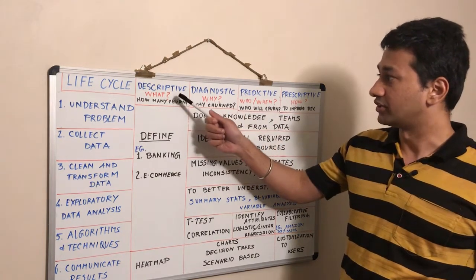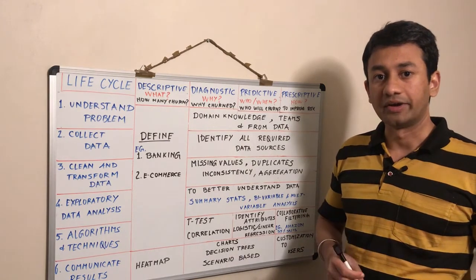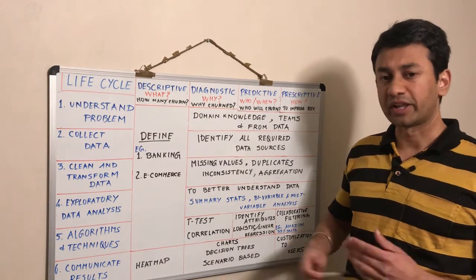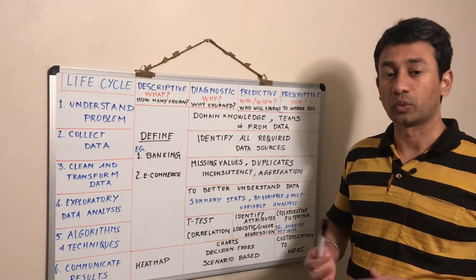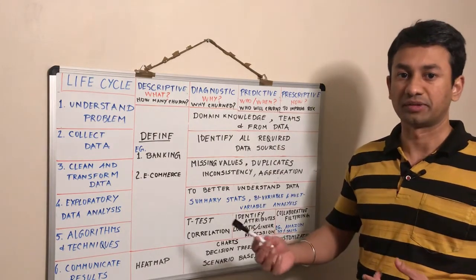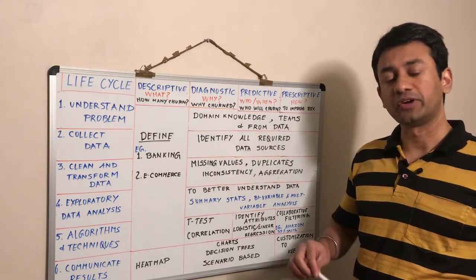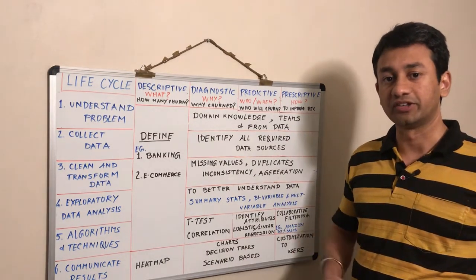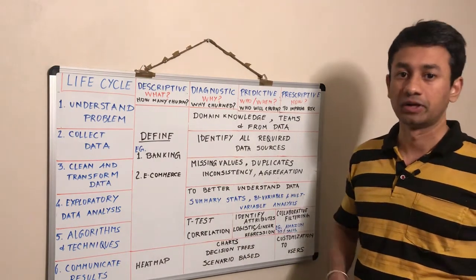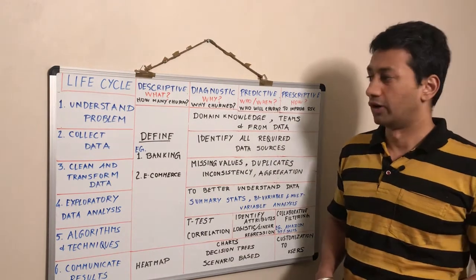In the first stage, descriptive, we try to interpret the data and understand what happened. In case of diagnostic, we try to analyze the data and figure out why something has happened. In case of predictive, we try to forecast or predict when something might happen. The last one is prescriptive. Here we try to analyze the data and use some advanced analytics models in order to figure out how to make something happen — how to increase the revenue, how to improve the retention rate, and so on.